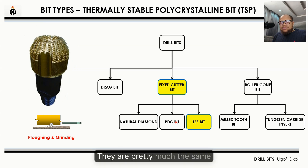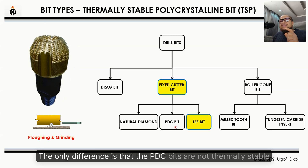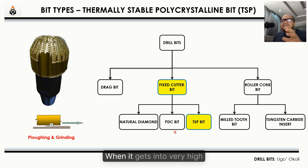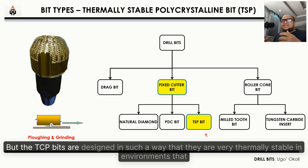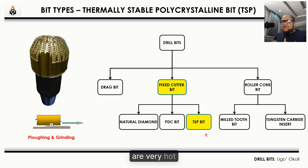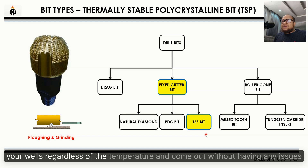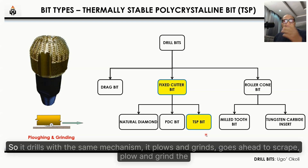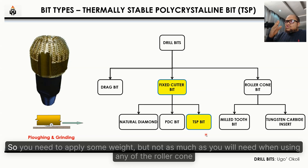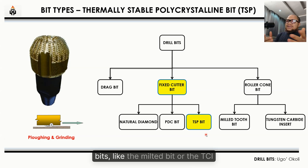The PDC bit is similar to the thermally stable polycrystalline (TSP) bit — they are pretty much the same. The only difference is that PDC bits are not thermally stable in very high temperature environments. The TSP bits are designed to be very thermally stable. Where PDC cannot function, for example in HPHT environments, the TSP will drill your wells regardless of temperature. It drills with the same mechanism — plows, grinds, and scrapes — requiring some weight, but not as much as roller cone bits.